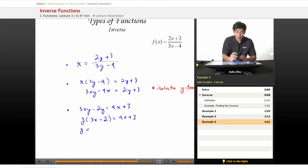And y, finally, equals 4x plus 3 over 3x minus 2.